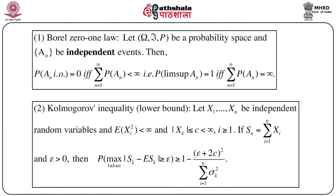Two supporting results. The first is the Borel 0-1 law: let (Omega, script F, P) be a probability space and A_n a sequence of independent events. Then the probability that A_n occurs infinitely often — that is, the lim sup of A_n — equals 0 if and only if the summation from n equals 1 to infinity of the probability of A_n is less than infinity. Equivalently, this probability equals 1 if and only if the summation of the probabilities of A_n equals infinity.